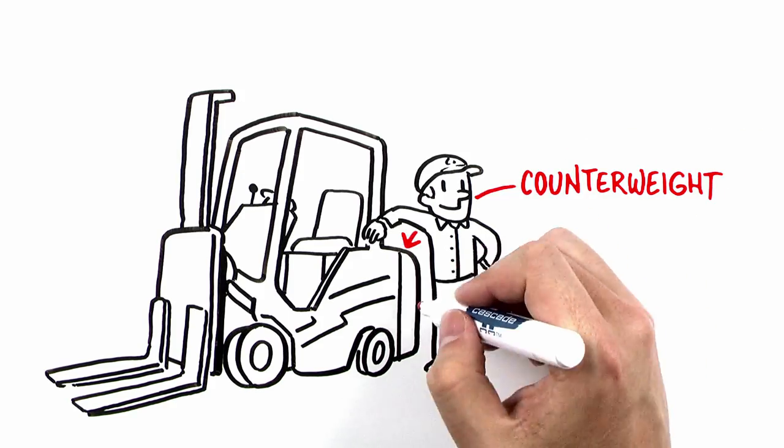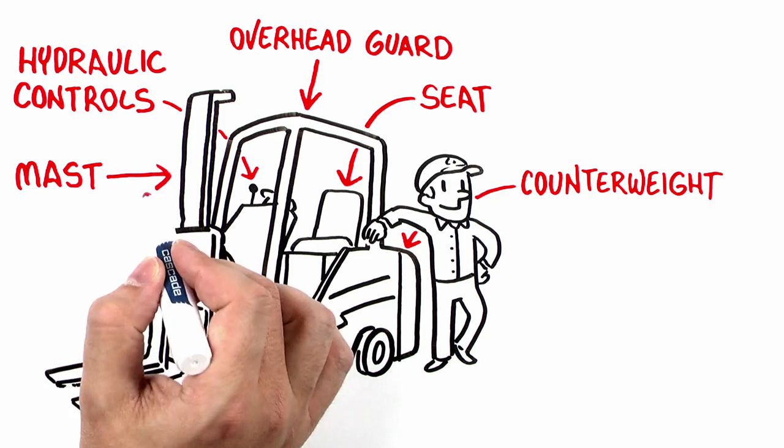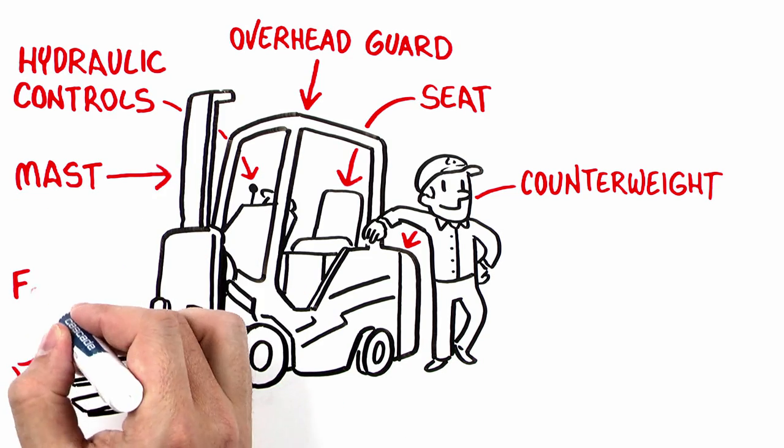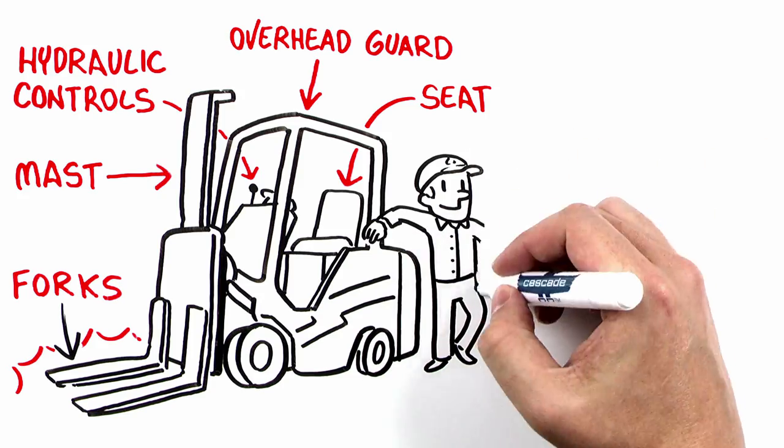You've got your counterweight, an overhead guard, a seat, some hydraulic controls, the mast, and lastly, what good would any forklift be without the forks? Nothing you haven't seen before.